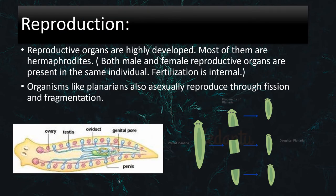Now let's look at reproduction in these organisms. The reproductive organs are highly developed. Most of them are hermaphrodites, which means that both male and female reproductive organs are present in the same individual. Fertilization is internal. Organisms like planarians also asexually reproduce through fission and fragmentation.